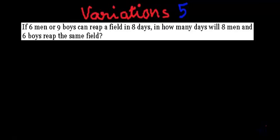Here the field is a constant, so the amount of work is constant, and the number of persons employed will determine the number of days required to reap the field. If we employ more people, the number of days required will be less, and if we employ fewer people, the number of days required will be more. The problem states that six men or nine boys can reap the field in the same number of days, that is eight.